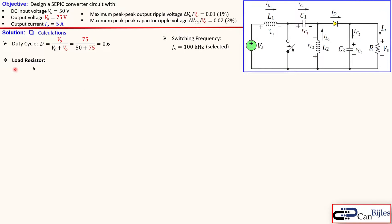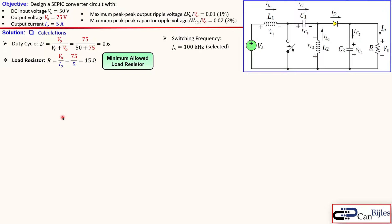The load resistor must have a minimum value. In our case we need 75 volts and 5 amperes, so using Ohm's law we have a minimum value of 15 ohms. If you go down to 12 or 10 ohms, more current is required and the design will not be met. So 15 ohms is the minimum allowed load resistor.